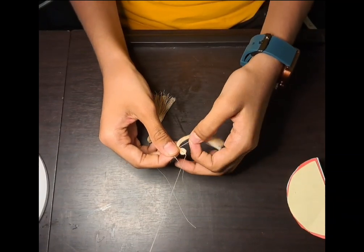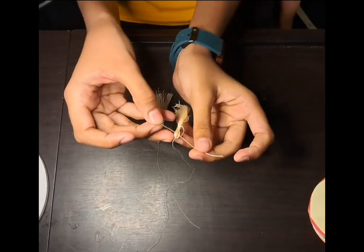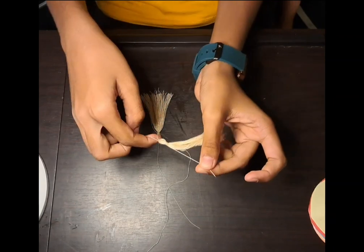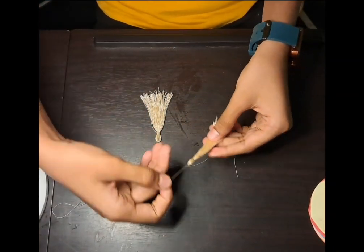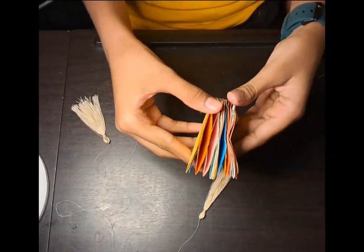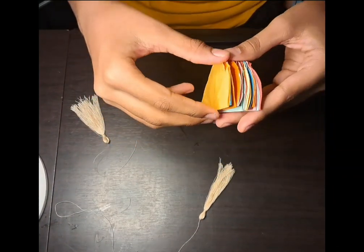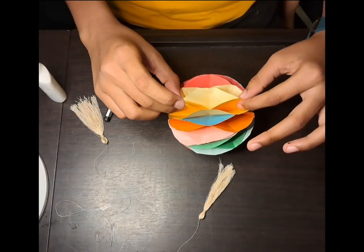After taking from the middle, I will tie it. Now see, I have made one tie. Like this, you can make however many DIY you want. This is a honeycomb which we have made. Now see, we have got this structure.